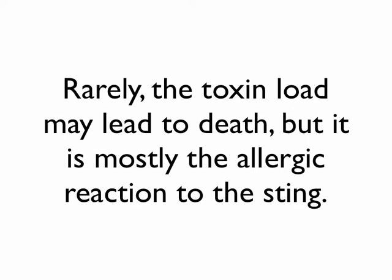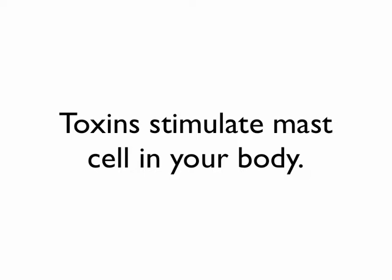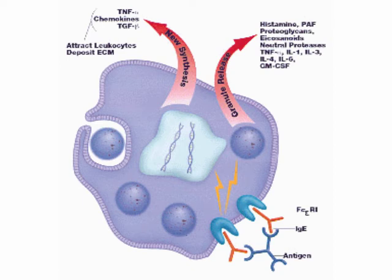When the venom of the Hymenoptera insect enters the body, it stimulates your immune system — specifically, cells called mast cells. Mast cells coat the venom with IgE antibodies, and when those antibodies bind to the surface of the mast cell, it causes little vacuoles — small containers inside the mast cell — to migrate to the surface and release histamine.